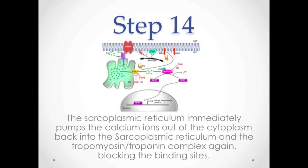Once this happens, the sarcoplasmic reticulum immediately pumps the calcium ions out of the cytoplasm, back into the sarcoplasmic reticulum, and the tropomyosin and troponin complex again, blocking the binding sites. After this happens, the muscle cell relaxes and waits for the process to start over again. These are the steps to single muscle contraction. Now imagine how complex this process is, with thousands of muscle cells contracting at the same time, and what a wonderful thing this is that God created.